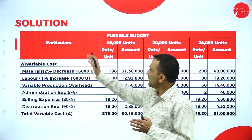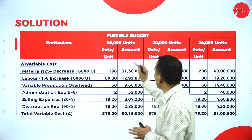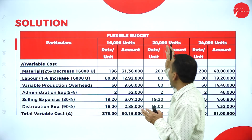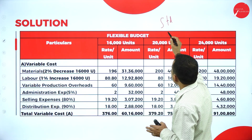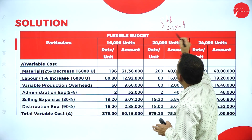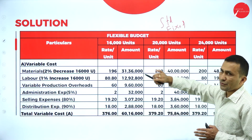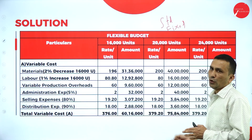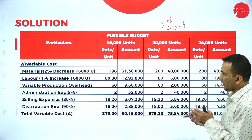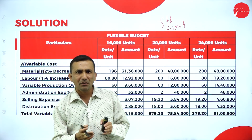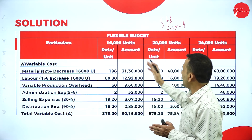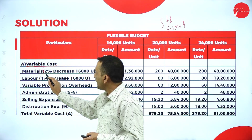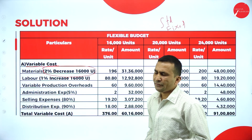You need to draw a format with three capacity columns: 16,000 units, 20,000 units (the standard or fixed budget), and 24,000 units. For each capacity, there are two columns — rate per unit and amount. The 20,000 column is the fixed budget; 16,000 and 24,000 are the flexible budget. We are using a marginal costing statement format for this consolidated problem, starting with variable costs.